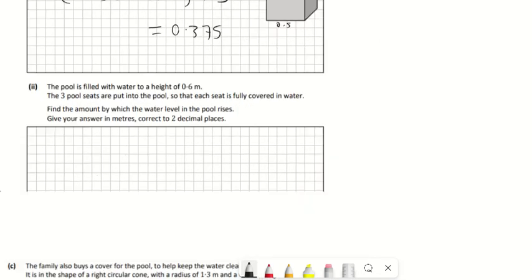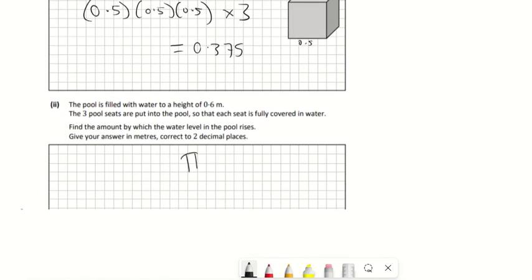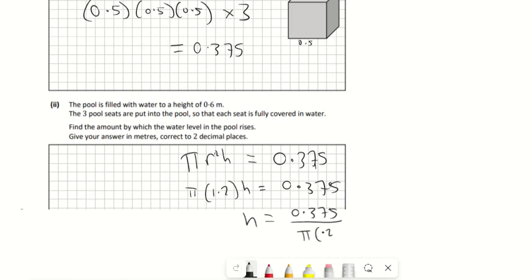So it'll be π r² h has to equal the extra volume. The extra volume is 0.375. The height we don't know—the radius will still be the same. The height is what we're trying to find out, the extra little bit of height added. So that's equal to 0.375. We're just going to move over the π and the 1.2, so it'll be 0.375 over π times 1.2 squared. That'll give you 0.08 meters to two decimal places.